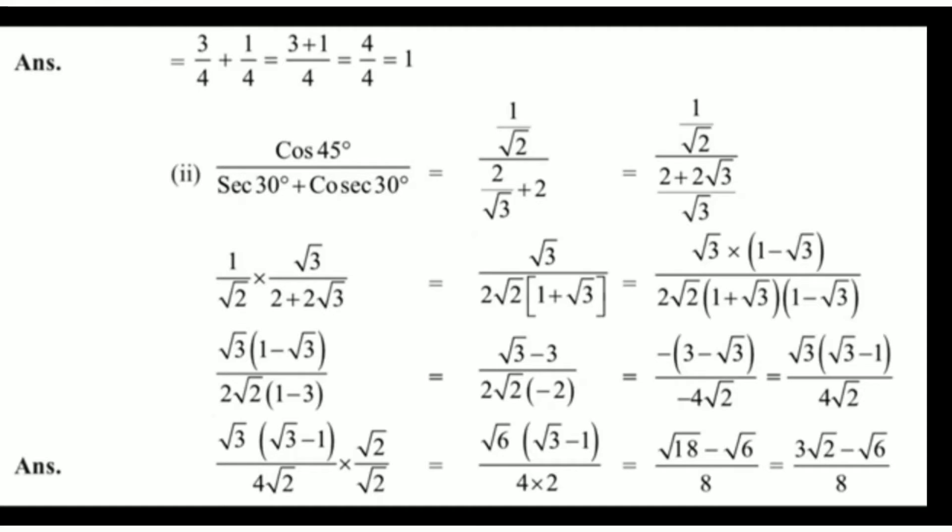The second part is cos 45° divided by (sec 30° + cosec 30°). We substitute the values: cos 45° = 1/√2, sec 30° = 2/√3, and cosec 30° = 2. We need to make the denominator a single term. Taking the LCM, the denominator becomes (2 + 2√3)/√3.